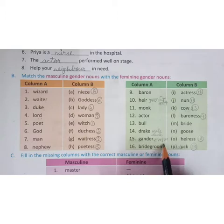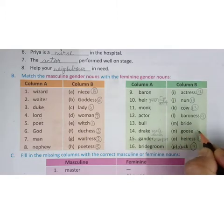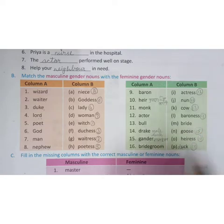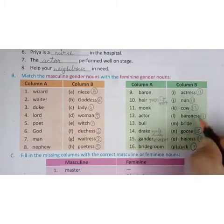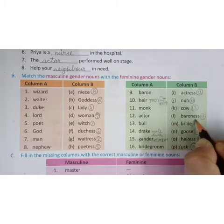Gander means male goose. Gander's feminine is goose. This is the fifteenth answer. Bridegroom means dulha. The feminine is dulhan, that is bride. When a woman gets married, the feminine gender is bride.